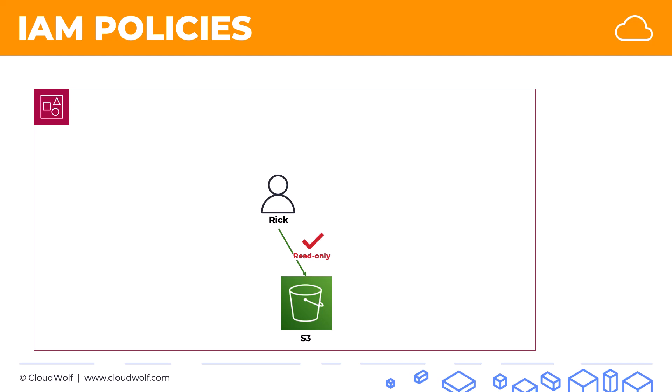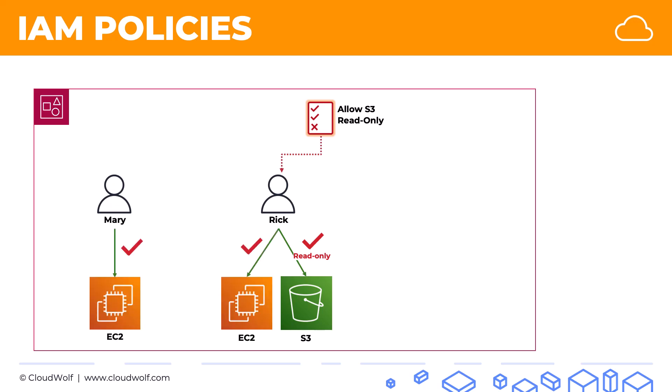What we can do is go and look through the available policies managed by AWS, and we'll find one which allows S3 read-only access. All we need to do is attach that policy to Rick's profile and Rick will have that read-only access. Now let's say there's another user named Mary, and both Rick and Mary need full access to the EC2 service. We'll find a policy called Allow EC2 and attach it to both Mary and Rick.